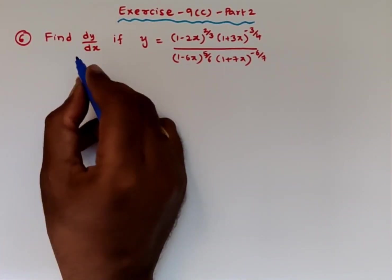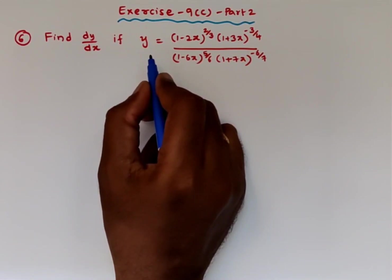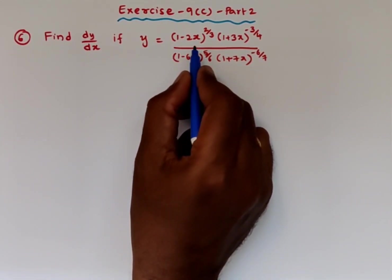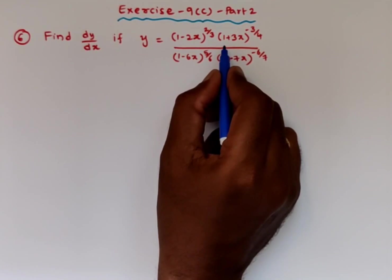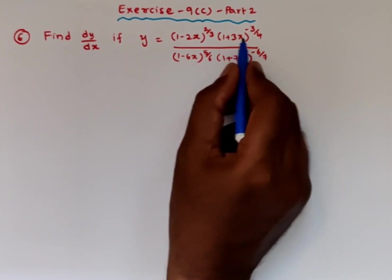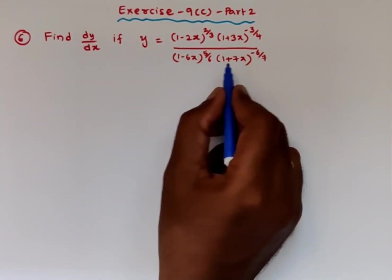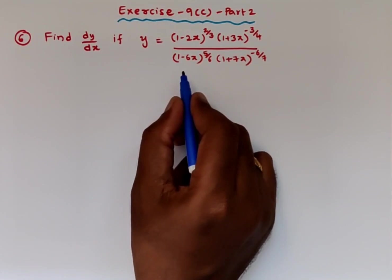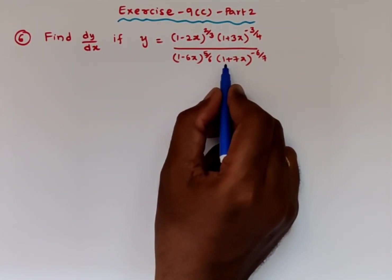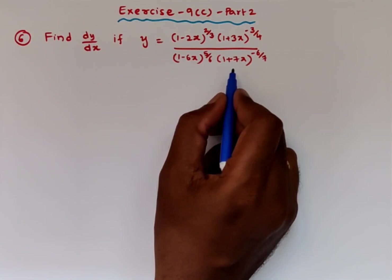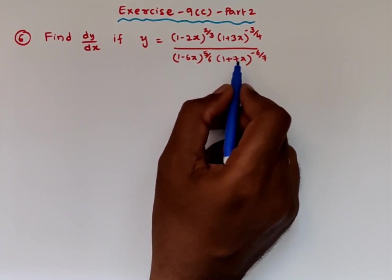The 6th problem: find dy/dx if y equals (1 minus 2x)^(2/3) times (1 plus 3x)^(minus 3/4), whole divided by (1 minus 6x)^(5/6) times (1 plus 7x)^(minus 6/7).